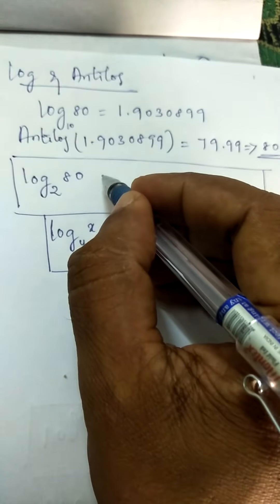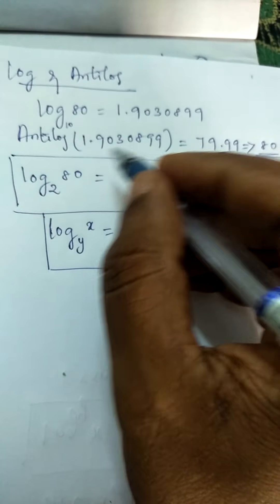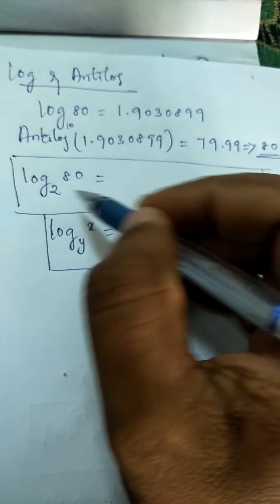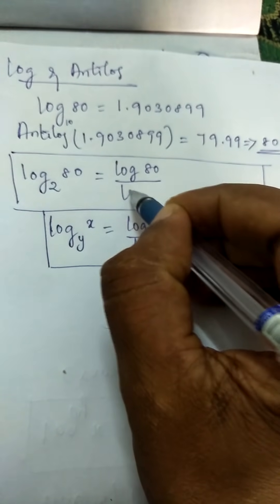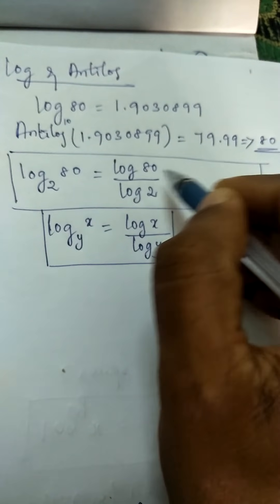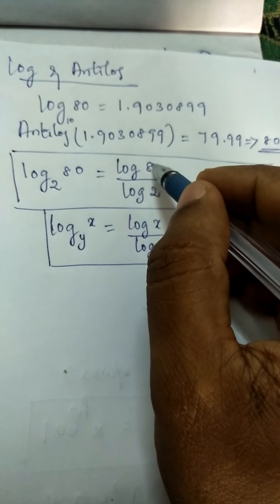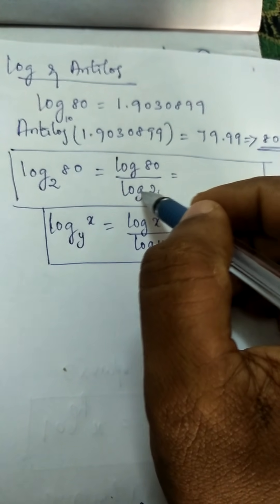So according to this formula, how can we substitute? So here x is 80 and y is 2. That is nothing but log 80 by log 2. Now this becomes a natural log, that is log 80 to the base 10 and log 2 to the base 10.